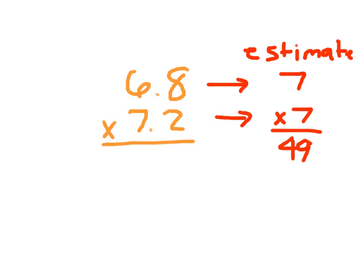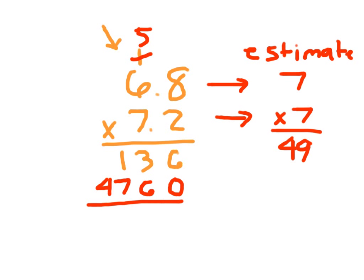Now we work with our multiplication problem involving decimals, but we ignore the decimal places. Starting with the 2: 2 times 8 is 16, write 6 and regroup the 1. 2 times 6 is 12, plus 1 is 13. For the 7, we're ignoring the decimal so this is worth 70 — we have to place that 0. 7 times 8 is 56, write 6 and regroup the 5. 7 times 6 is 42, plus 5 is 47. Adding those two numbers together gives us 4896.